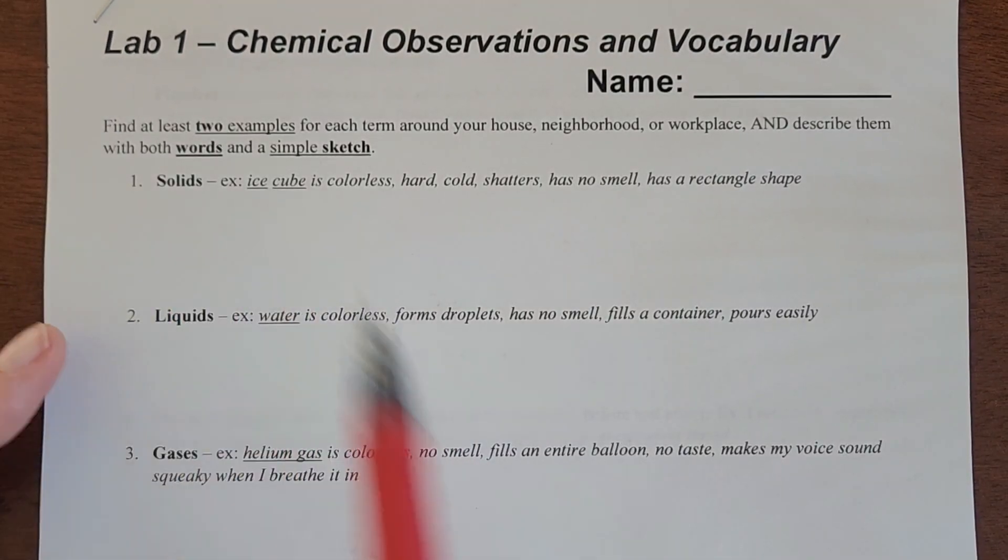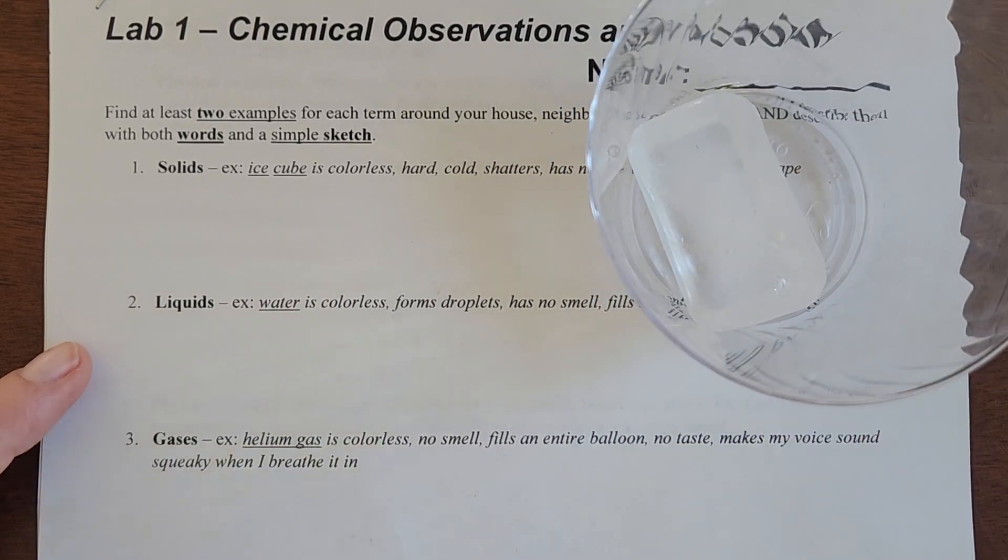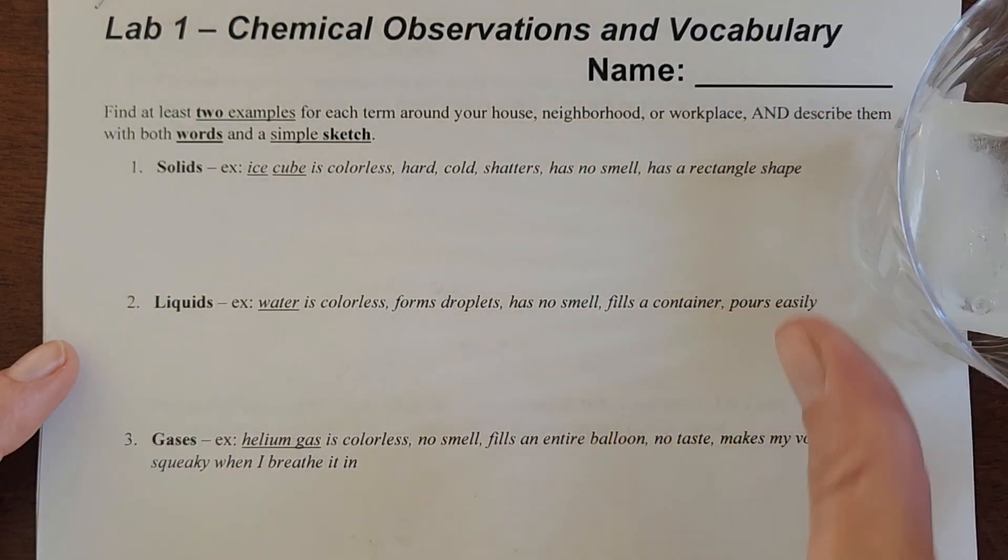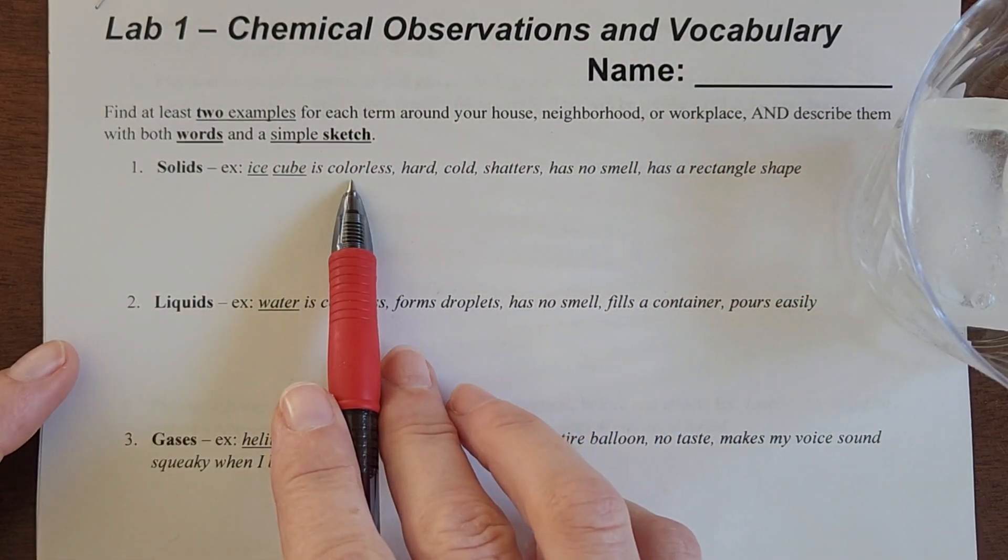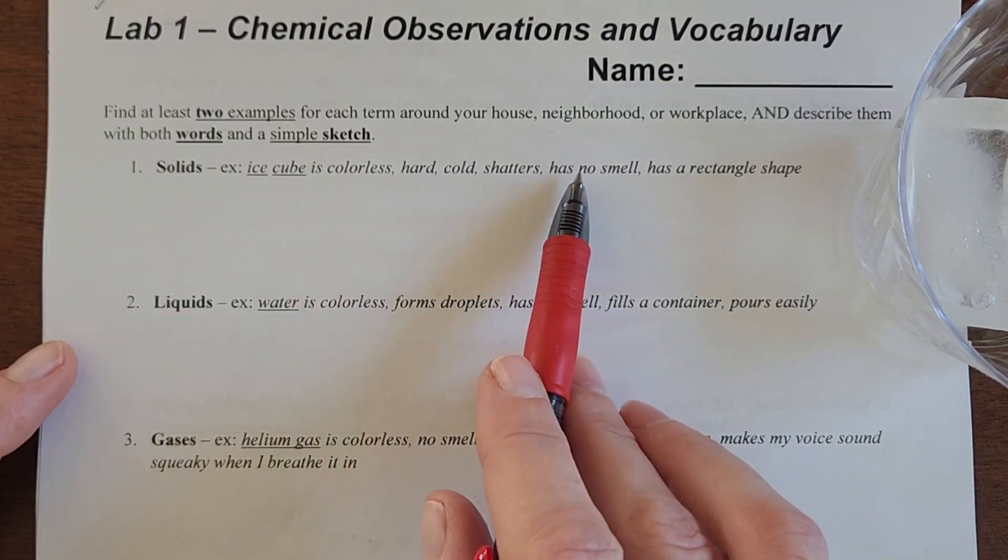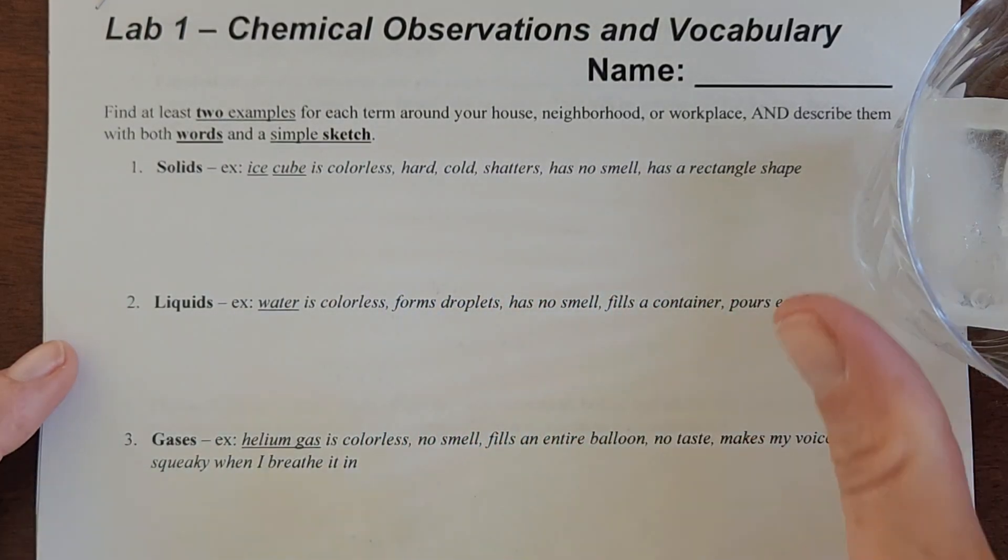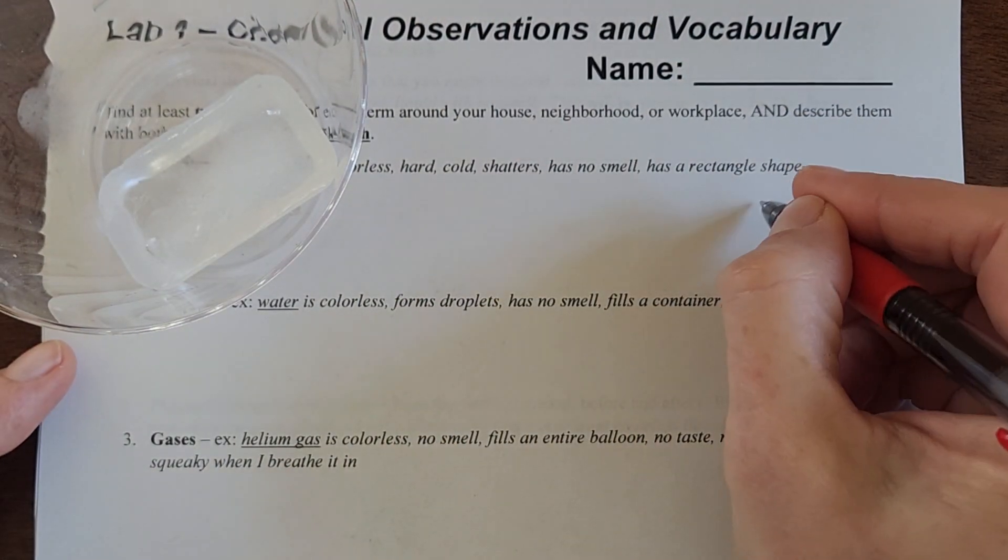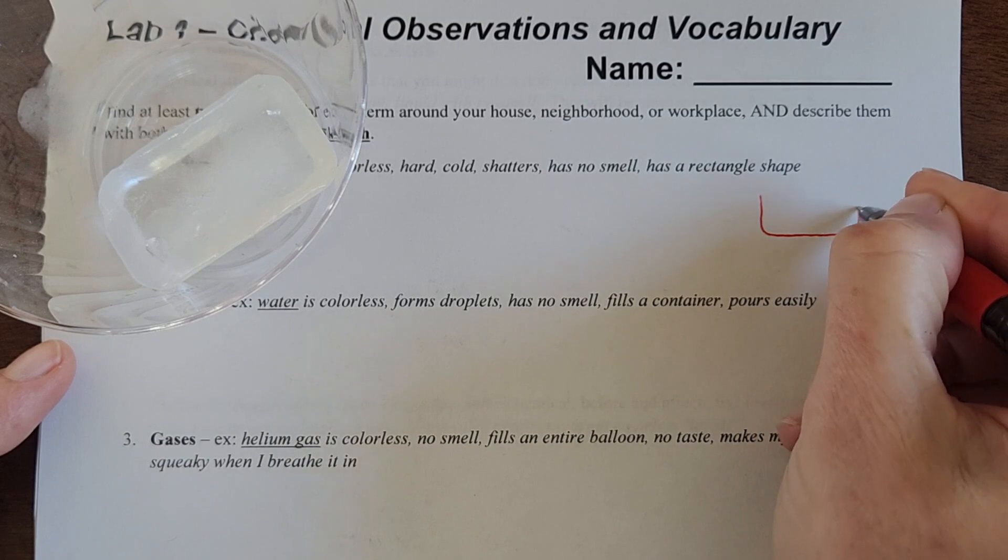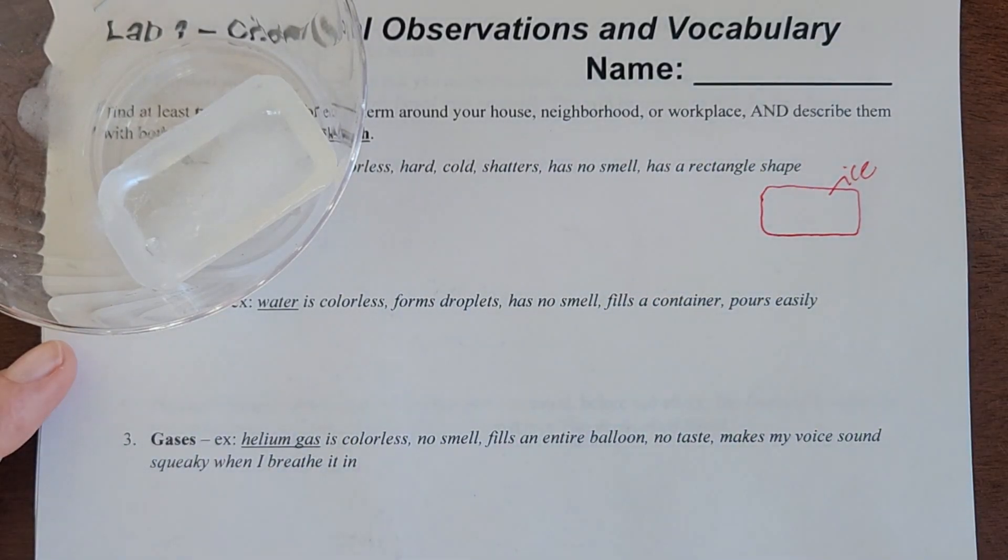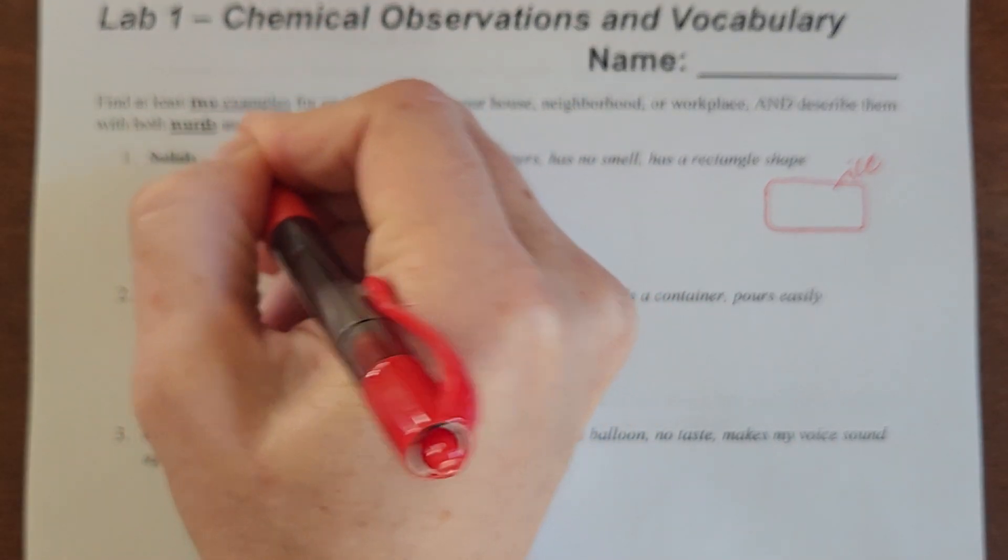For example, if you've got a solid, maybe you have an ice cube. You're going to want to write down some words to describe it. For example, colorless, hard, cold, can shatter, has no smell. Here mine particularly has a rectangular shape, and so maybe I just draw my ice cube very simply. This is the level of pictures that we're talking about.